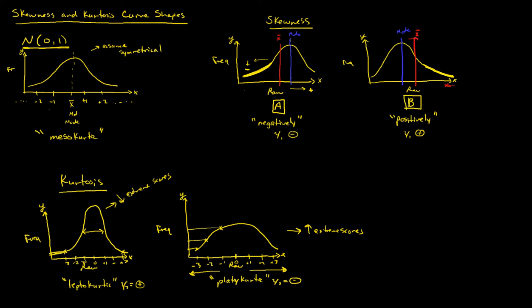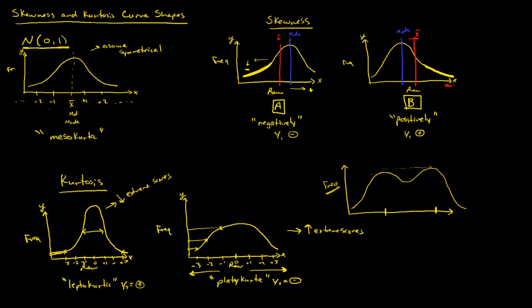There are other types of distributions you might see. A bimodal distribution goes up, comes down, goes up, comes down again — you get two modes. One might be slightly higher, giving you a primary mode and a secondary mode, with two points of very high frequency counts.